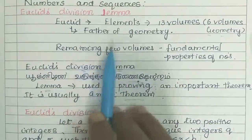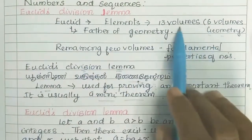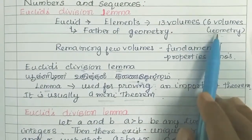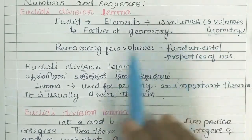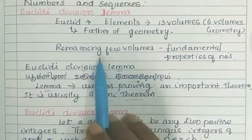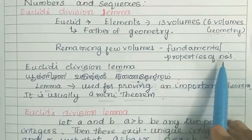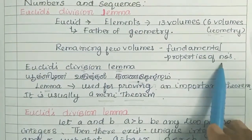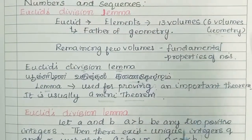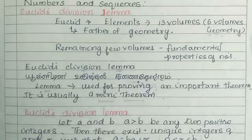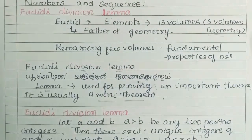In the 13 volumes, there are 6 volumes of Geometry and 7 remaining volumes. In those remaining volumes, a few cover the fundamental properties of numbers — the 4 operations: addition, subtraction, multiplication, and division.